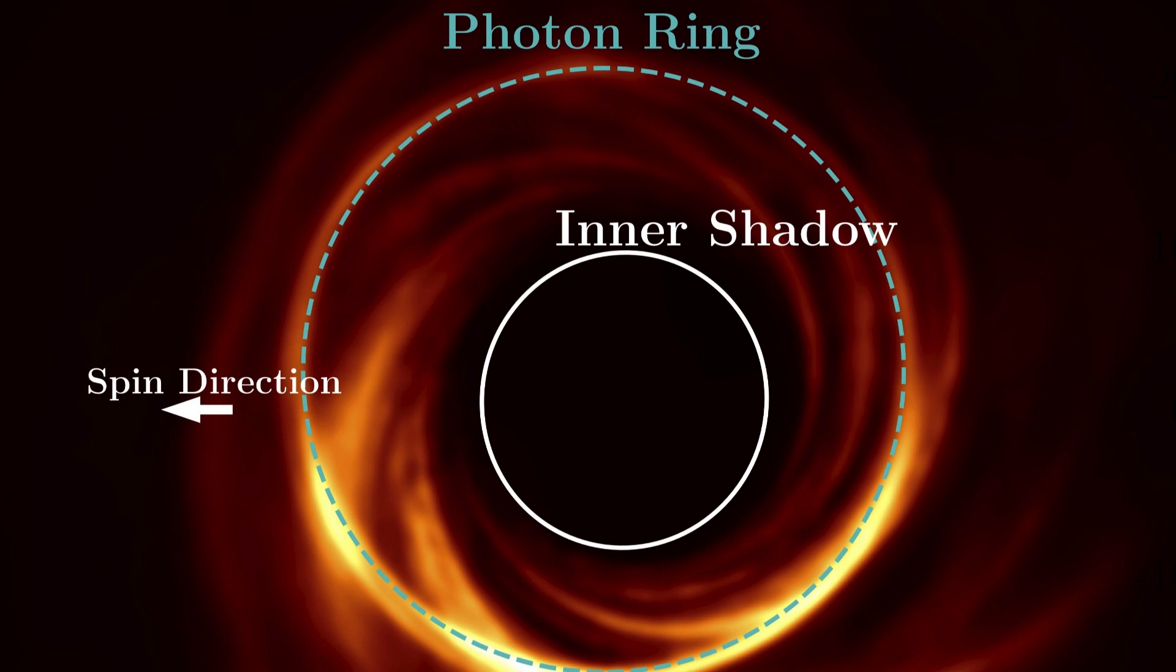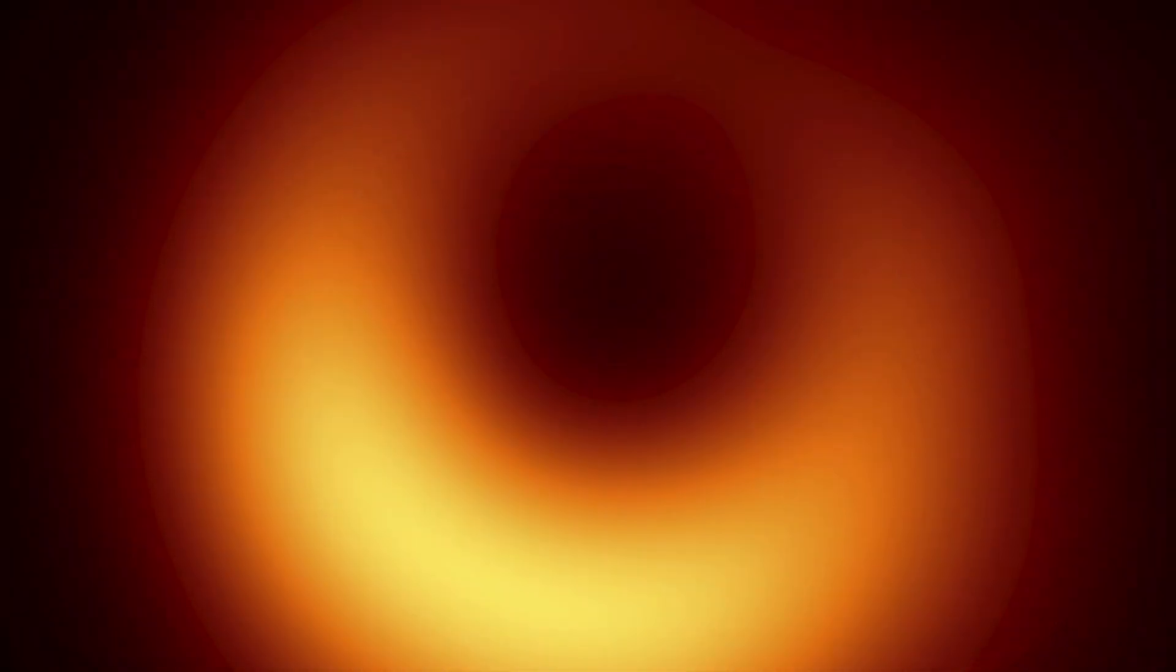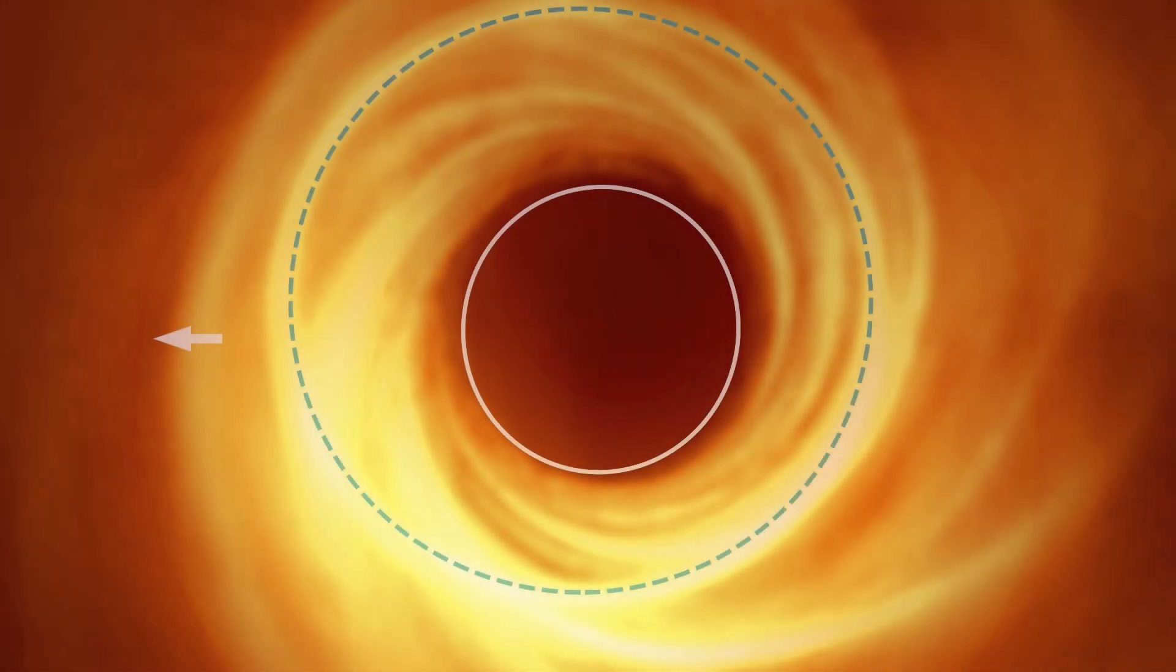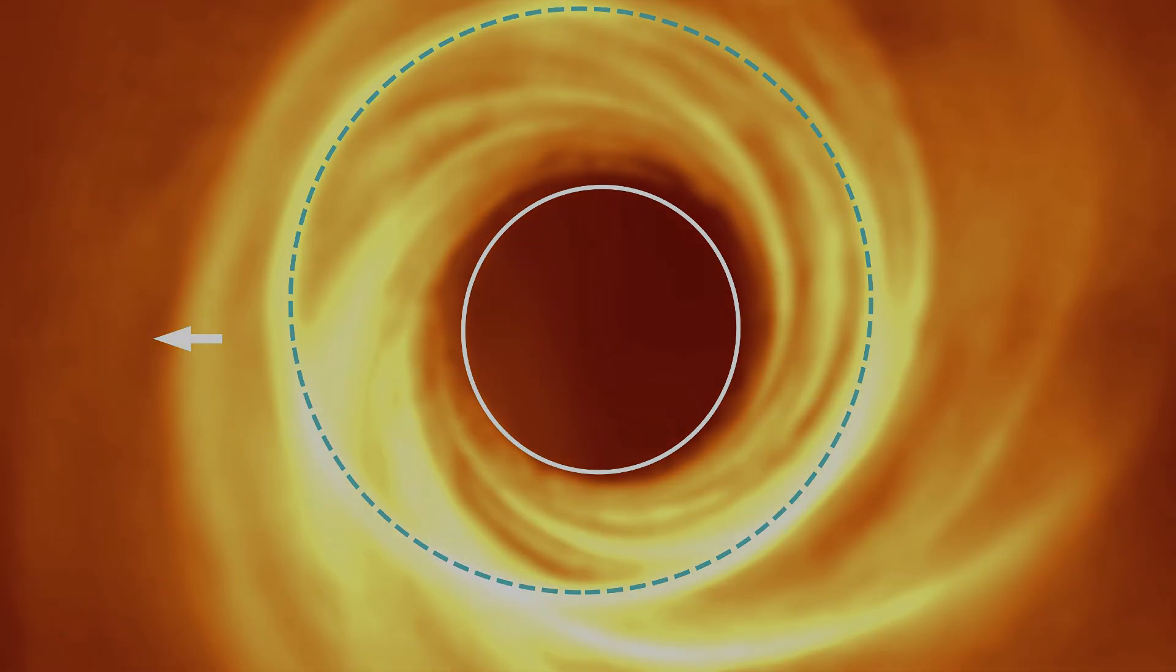The photon ring appears as a thin, bright ring of light encircling the black hole. It is often described as a series of concentric, infinitely thin rings, because photons can orbit the black hole at various radii in stable orbits. These orbits are not static. Photons continuously orbit the black hole, creating the appearance of a ring.